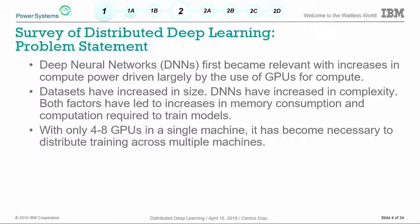Deep neural networks really came into relevancy with the rise of compute power from GPUs, which gave us enough computational power to work on neural networks in reasonable amounts of time. But as soon as we could, people started throwing more data at them, making them deeper and bigger, driving up the computational need to train these networks. With only four to eight GPUs in a box, it quickly became necessary to distribute that training.